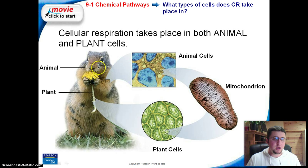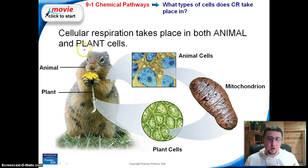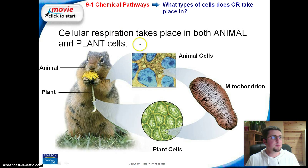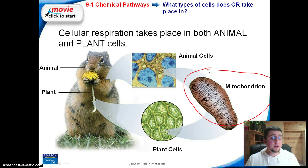In my last video I talked about how plants use photosynthesis to make food. Well, that food is no good unless it's broken down into energy. The way that it breaks down is through the process of cellular respiration that occurs in an organelle called the mitochondria. So an important thing to know is that it occurs in both plants and animals.